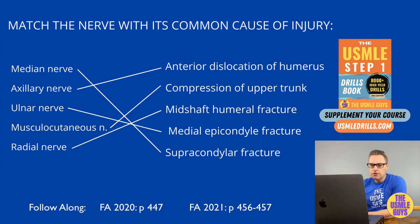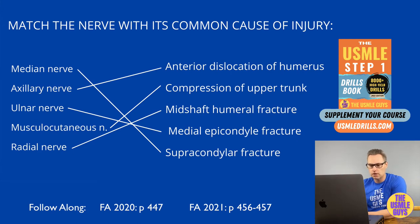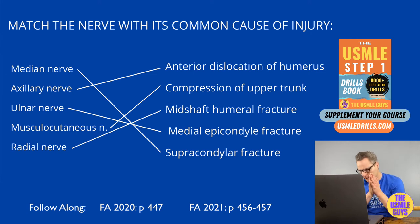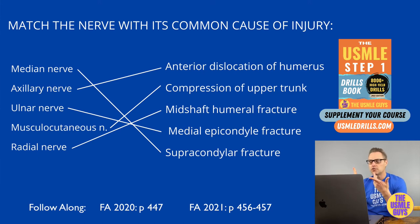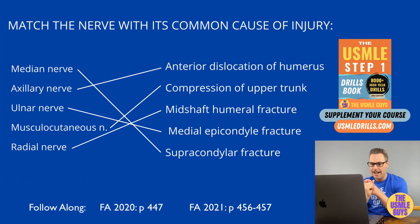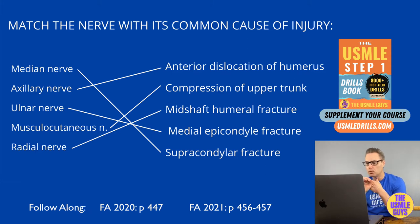Next is the median nerve. It originates from the medial and lateral cords of the brachial plexus, with the lateral root arising from anterior divisions of the superior and middle trunks, and the medial root from the anterior division of the inferior trunk. It provides sensation to the thenar eminence, the lateral two-thirds of the palm, the palmar aspect of the lateral three-and-a-half fingers, and the dorsal fingertips of the lateral three-and-a-half fingers — meaning the thumb, index, middle, and half of the ring finger.